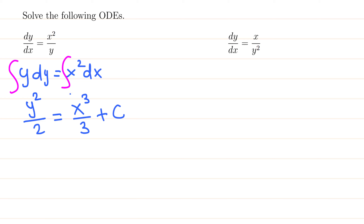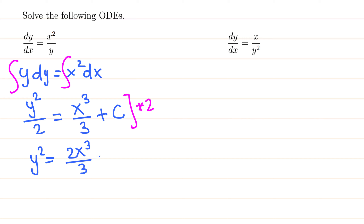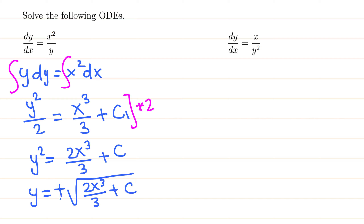To solve for y, let's multiply through by 2 — that cancels the 2 on the left side, giving y squared equals 2x cubed over 3 plus 2c₁, which we just write as c. Finally, taking the square root of both sides: y equals plus or minus the square root of (2x cubed over 3 plus c). That's the final answer.